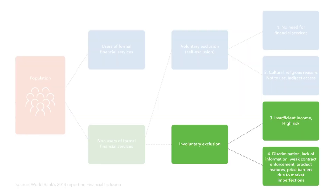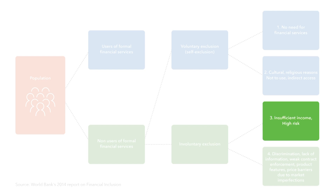Out of these, some have insufficient income or are of such high risk that a prudent financial system will exclude them. Among low-income excluded individuals are those who only demand small services — that is, small loans, savings, etc. — that do not warrant the fixed costs implicit in financial intermediation.